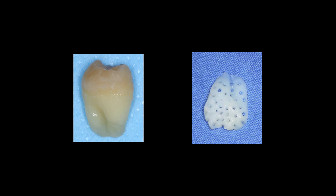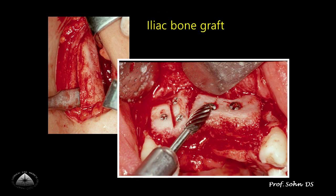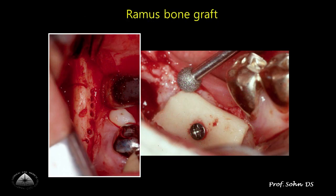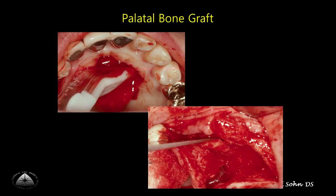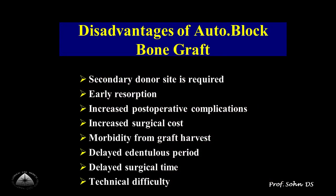Bone graft plays an important role in ridge augmentation. Various bone grafts have been widely used for ridge and sinus augmentation for several decades. The use of autogenous bone is preferred because it has osteoinductivity and osteoconductivity, but its use is limited due to disadvantages such as morbidity of the second surgical site and prolonged surgical time.